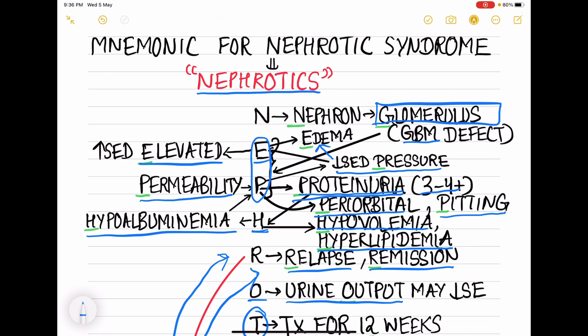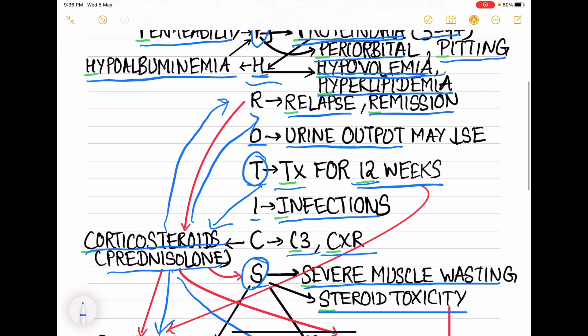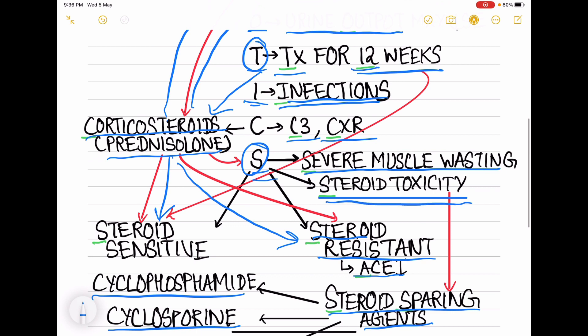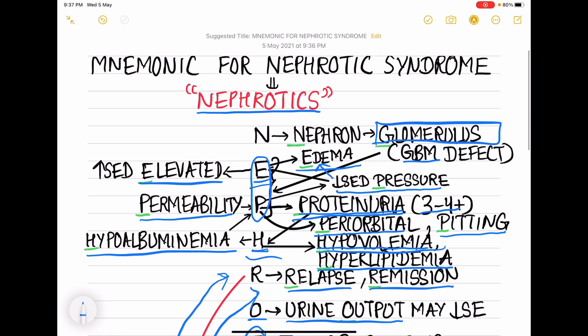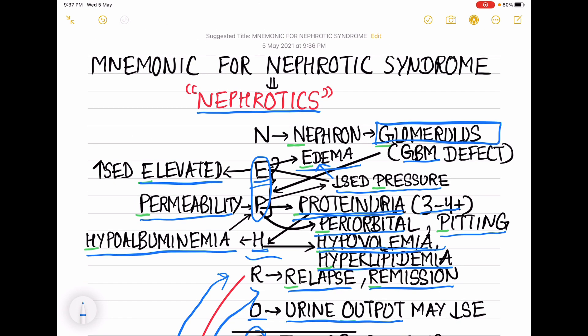This was about the treatment. Now coming to the complications of nephrotic syndrome - this also you can remember from this. E stands for edema, H stands for hypovolemia, I stands for infections, S stands for steroid toxicity. These are the complications of nephrotic syndrome. With this we will end the session. If you want to take the notes of nephrotic syndrome properly, you can refer the video which is being shown on the left of the screen. I hope it was useful. If you like the video, please do like, share, subscribe, comment. Thank you.